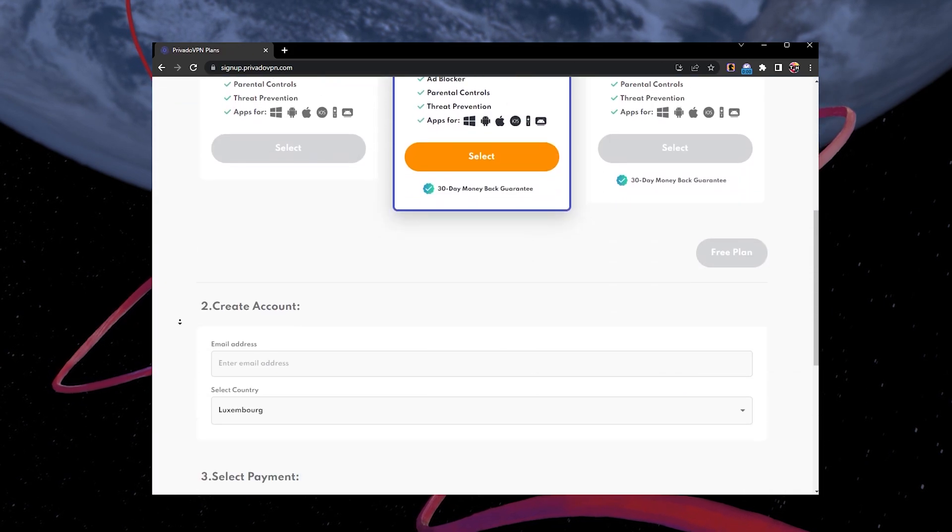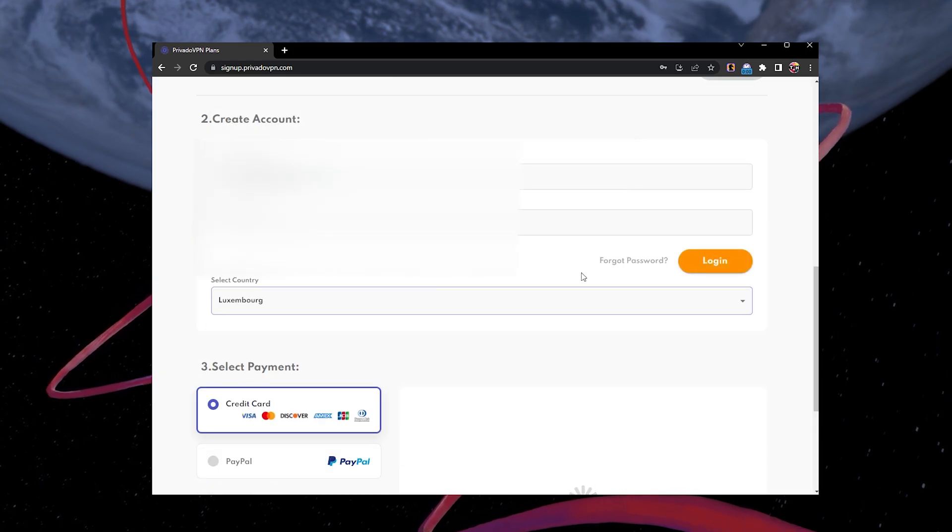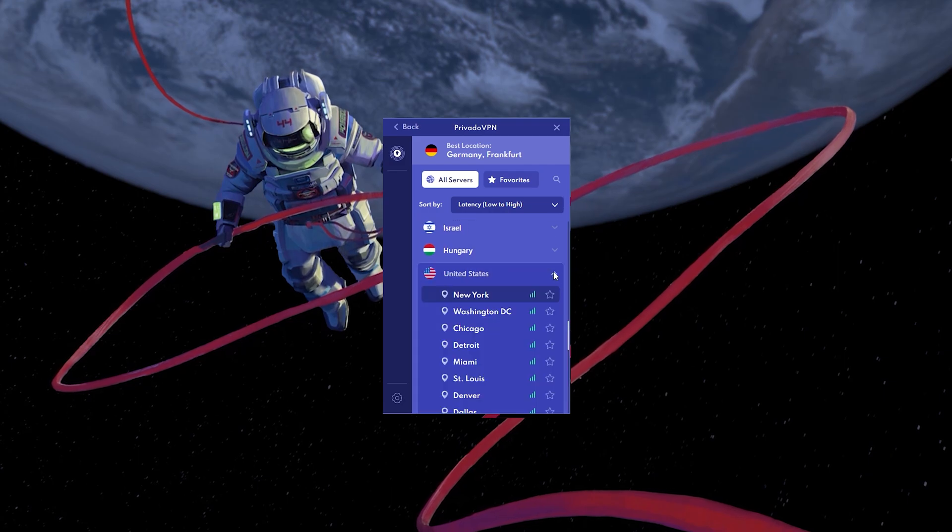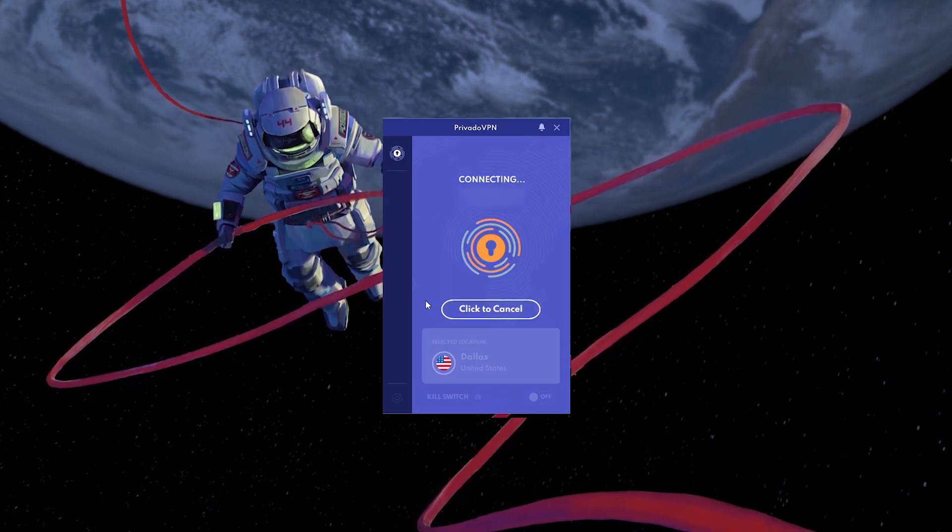After downloading and installing PrivadoVPN, run the connection process. Remember to close the CapCut application before changing your connection using a VPN.